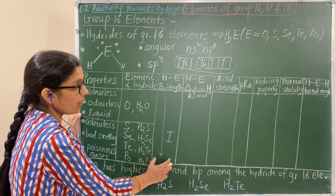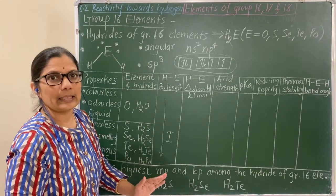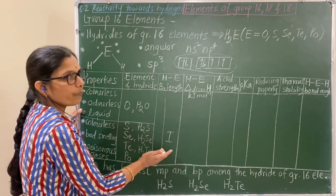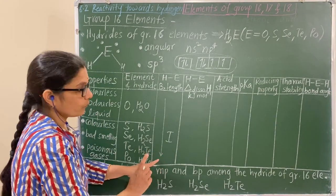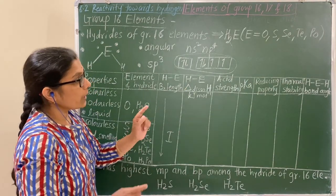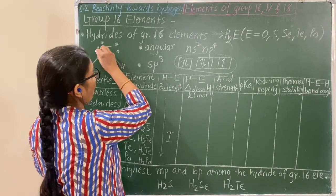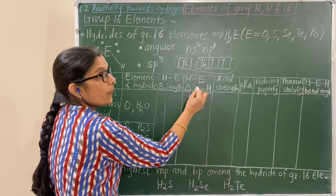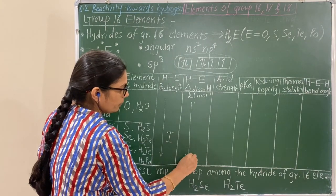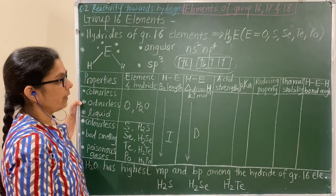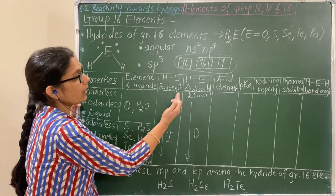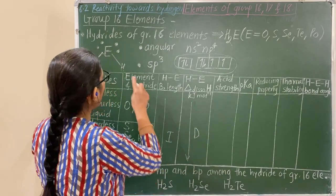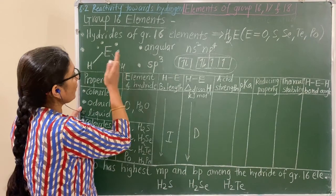As size increases down the group, the bond length increases, making it a weaker bond. Bond strength decreases, meaning the energy required to break the E–H bond goes on decreasing — that is, the enthalpy of dissociation decreases.